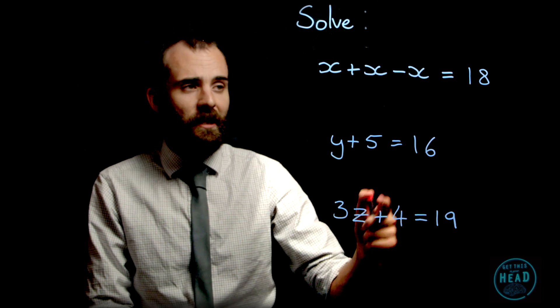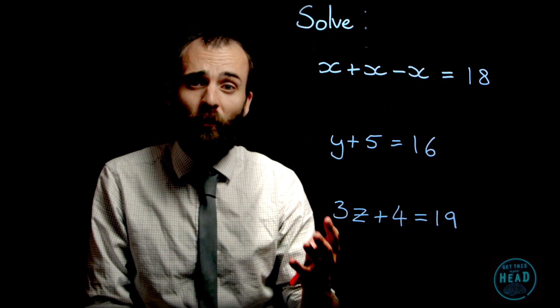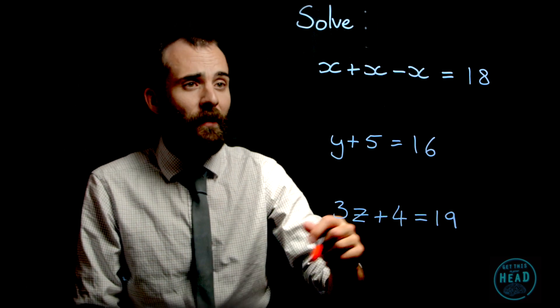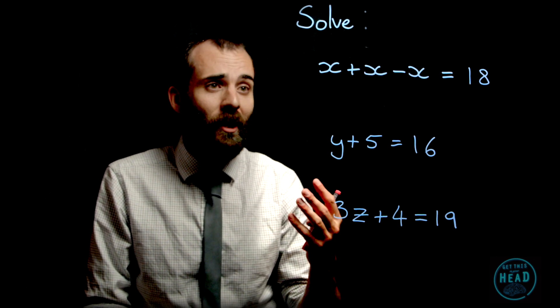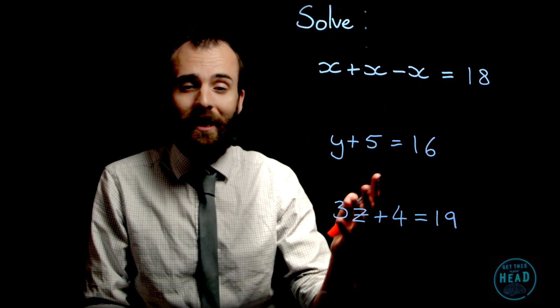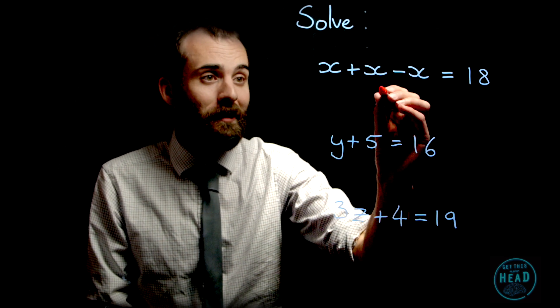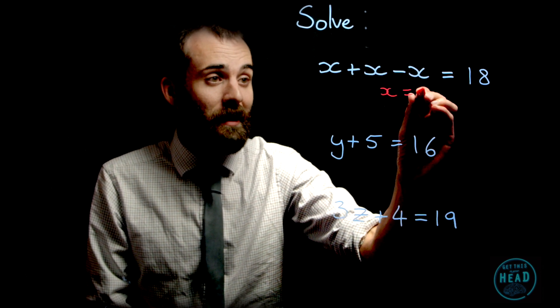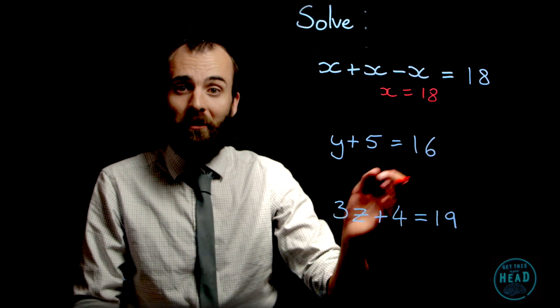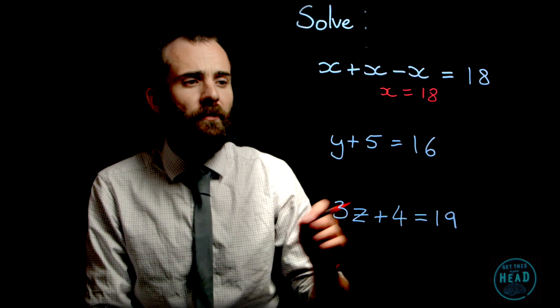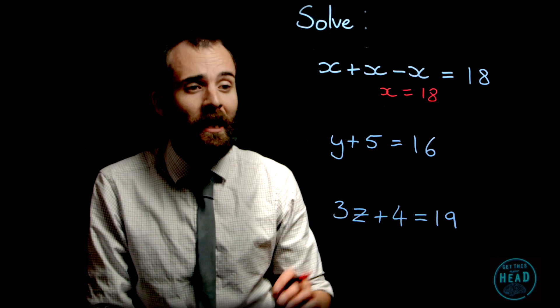x minus x equals 18. I have to solve it, I have to work out what x would be. Let's simplify this section here: x plus x is 2x, 2x take away x is just x again. Therefore, x equals 18. There it is, really simple.